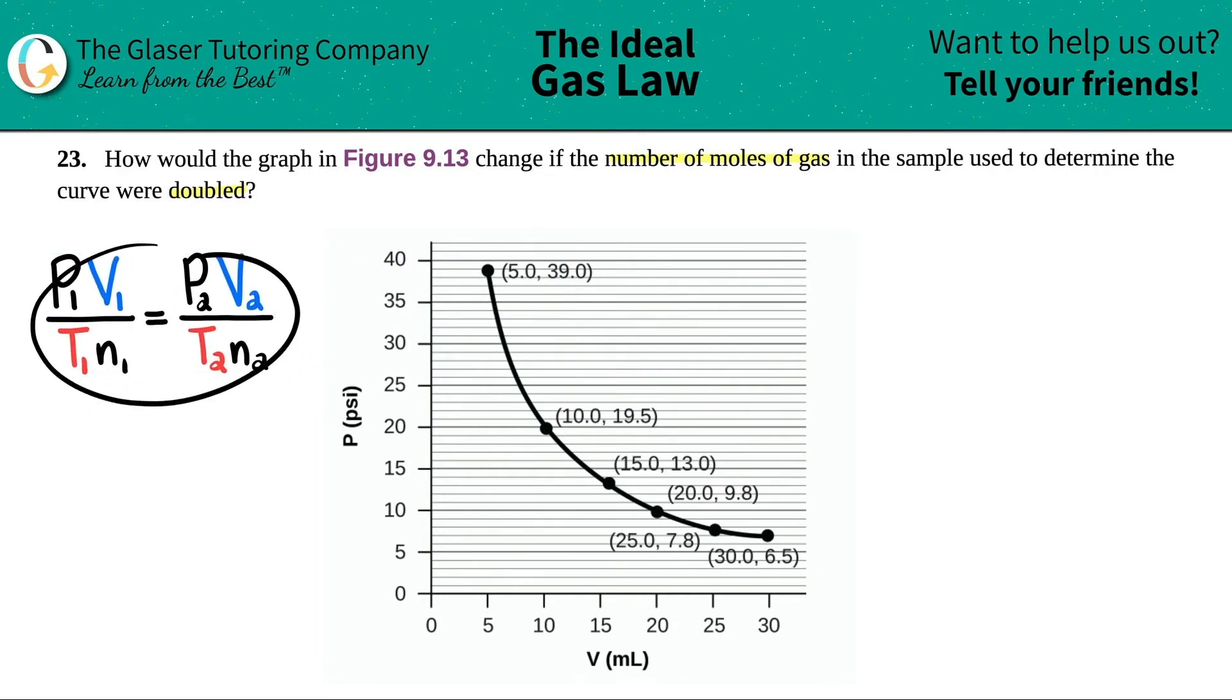The combined gas law has four variables: pressure, volume, temperature, and n is the number of moles. Now, since they don't tell me anything about temperature, I can just say bye-bye—that's totally doable, totally legal. We could just get rid of the T's. Now we have to keep the n's because the number of moles are being doubled.